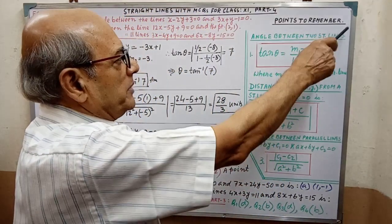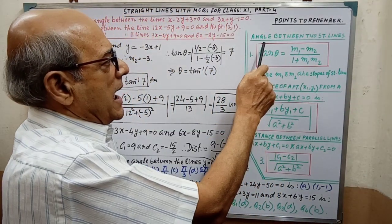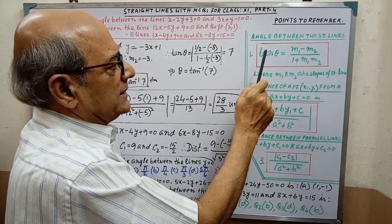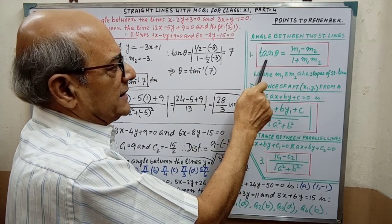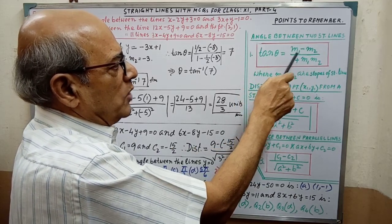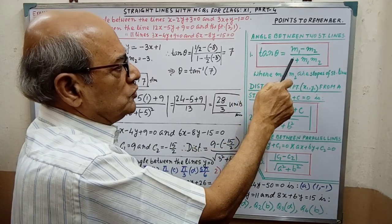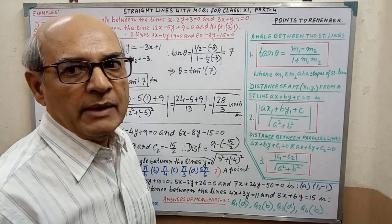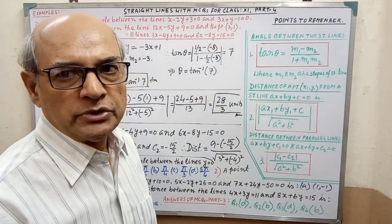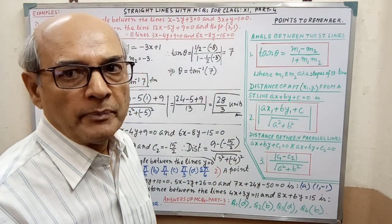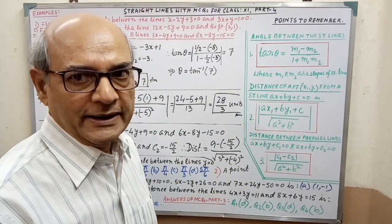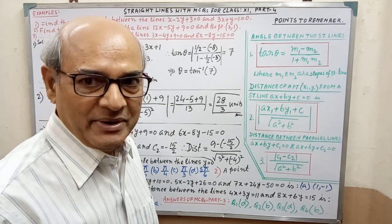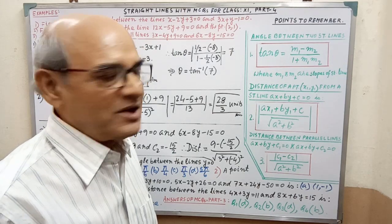Points to remember. Formula 1: Angle between two straight lines, that is tan θ = (m1 - m2) / (1 + m1·m2), where m1 and m2 are the slopes of the straight lines. You have to remember this.